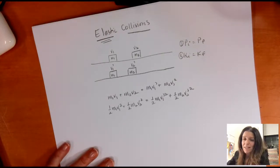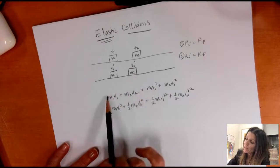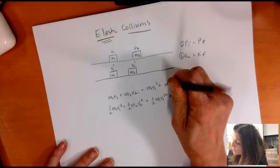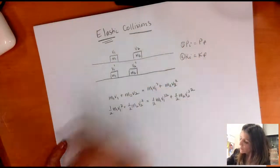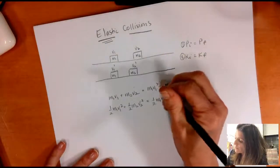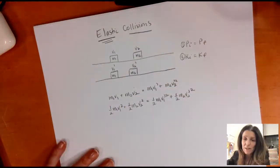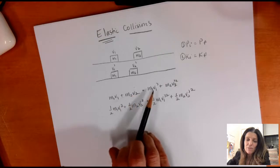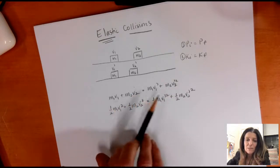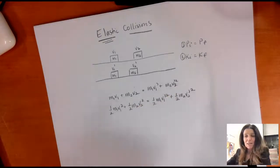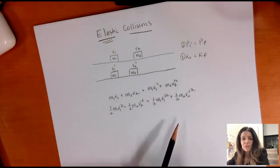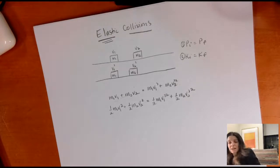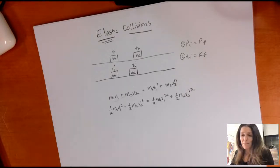The problem is if you solve for V1 or V2 prime and plug it into the energy equation, you get a massive quadratic equation that's really hard to solve. It's a ton of algebra and a real pain — you can wind up doing pages and pages of algebra and getting nowhere. So I'm going to show you a way I like to get these equations. Start with the momentum equation and instead of grouping by initial and final, group by mass — all the M1's on the left, all the M2's on the right. That gives M1 times (V1 minus V1 prime) equals M2 times (V2 prime minus V2).